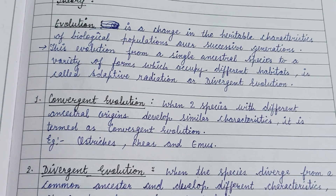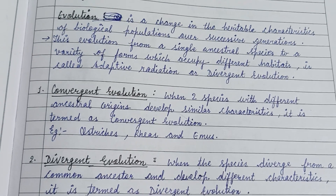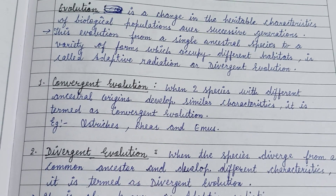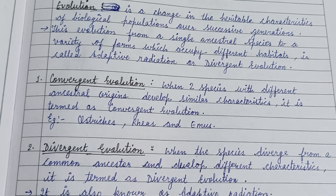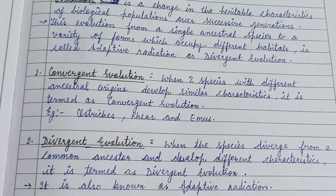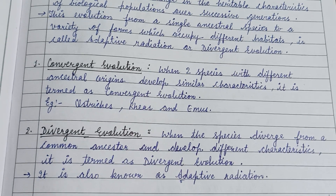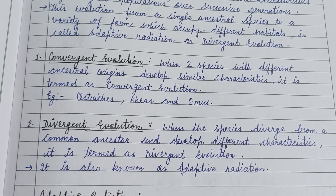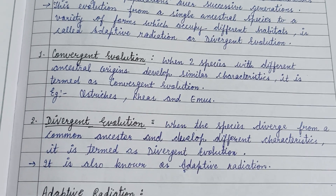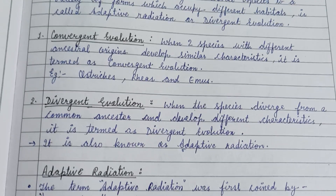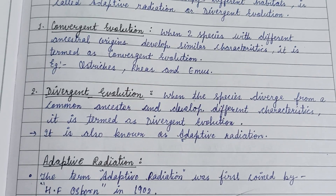Evolution is a change in the heritable characteristics of a biological population over successive generations. This evolution from a single ancestral species to a variety of forms which occupy different habitats is called adaptive radiation, or divergent evolution.